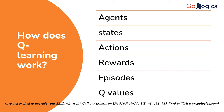An agent is the entity that acts and functions in an environment. A state is a variable that indicates where the agent is in its surroundings right now. An action is the way the agent acts in a certain condition. Giving an agent positive or negative feedback for their behavior is a fundamental idea in reinforcement learning. An episode occurs when an agent is unable to execute any more actions and is ultimately terminated. A Q-value measures an activity at a specific state using a statistic.